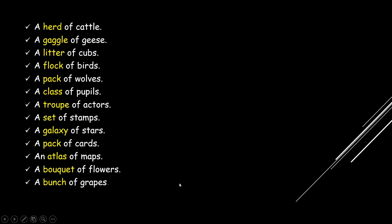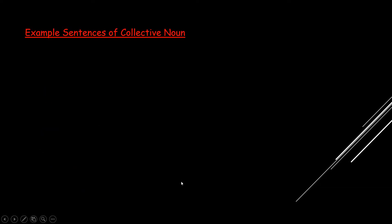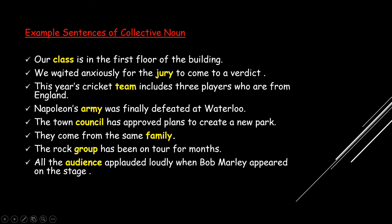Now let us take a look at some more examples. 'Our class is on the first floor of the building.' Here 'class' doesn't specify a single person — it says a group. Class is a group. 'We waited anxiously for the jury to come to a verdict.' Similarly, jury is also not just one person; it is a group of people.